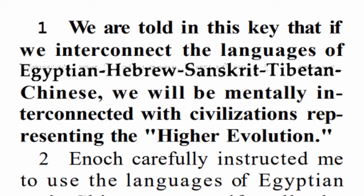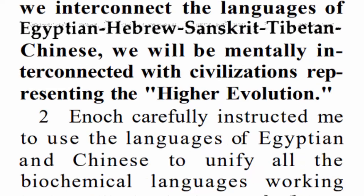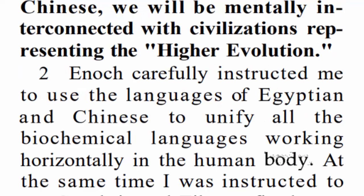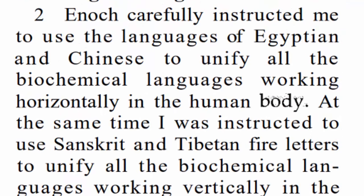We are told in this key that if we interconnect the languages of Egyptian, Hebrew, Sanskrit, Tibetan, and Chinese, we will be mentally interconnected with civilizations representing the higher evolution. So now here are these ancient languages — Egyptian, Hebrew, Sanskrit, Tibetan, and Chinese are significant. Let's look at verse two to find out how significant.